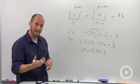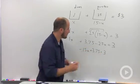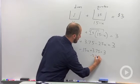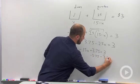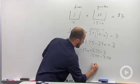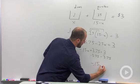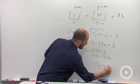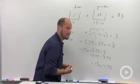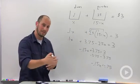Get our X term by itself, so subtract over the 3.75. End up with negative 0.15X is equal to negative 0.75. Solve it up, divide by that coefficient.